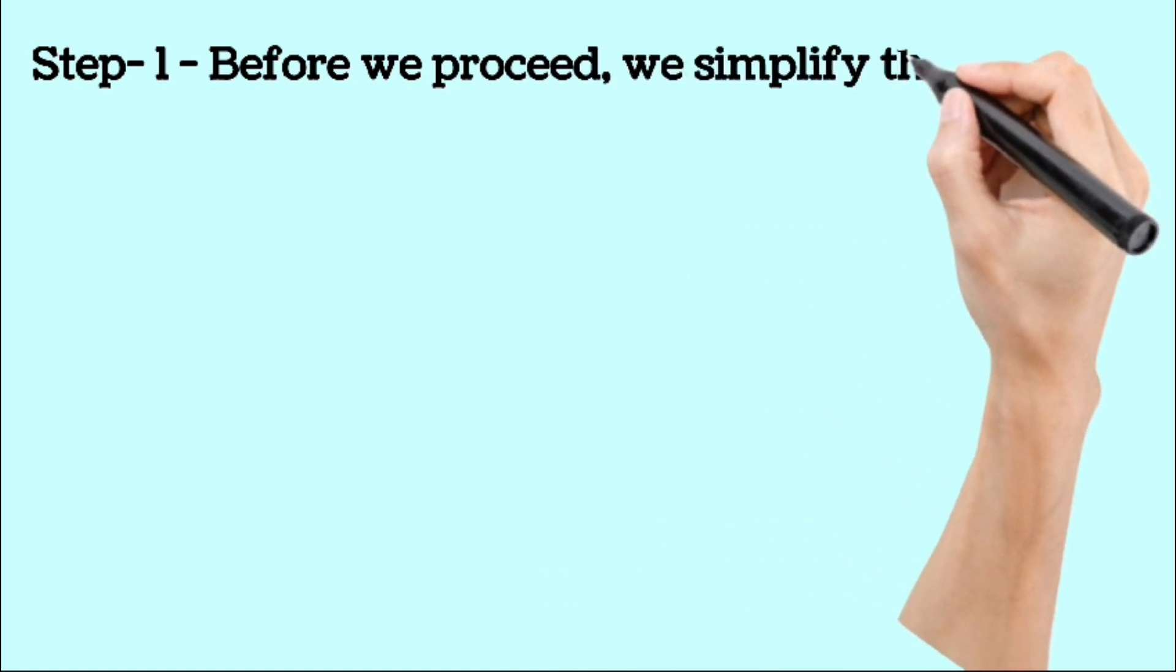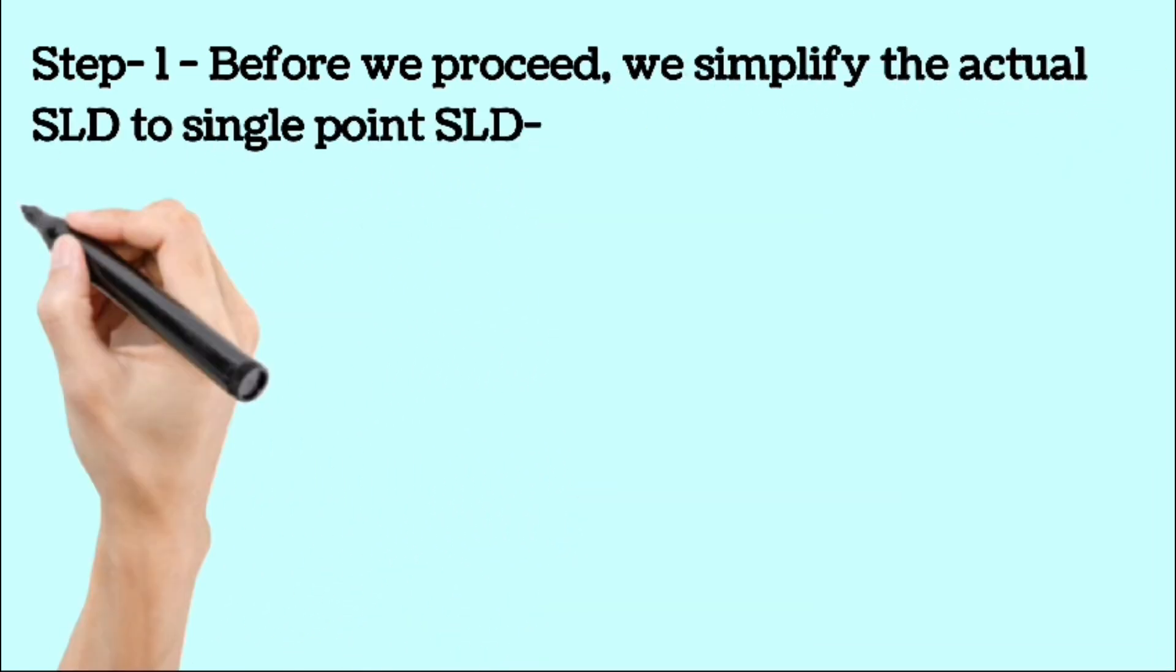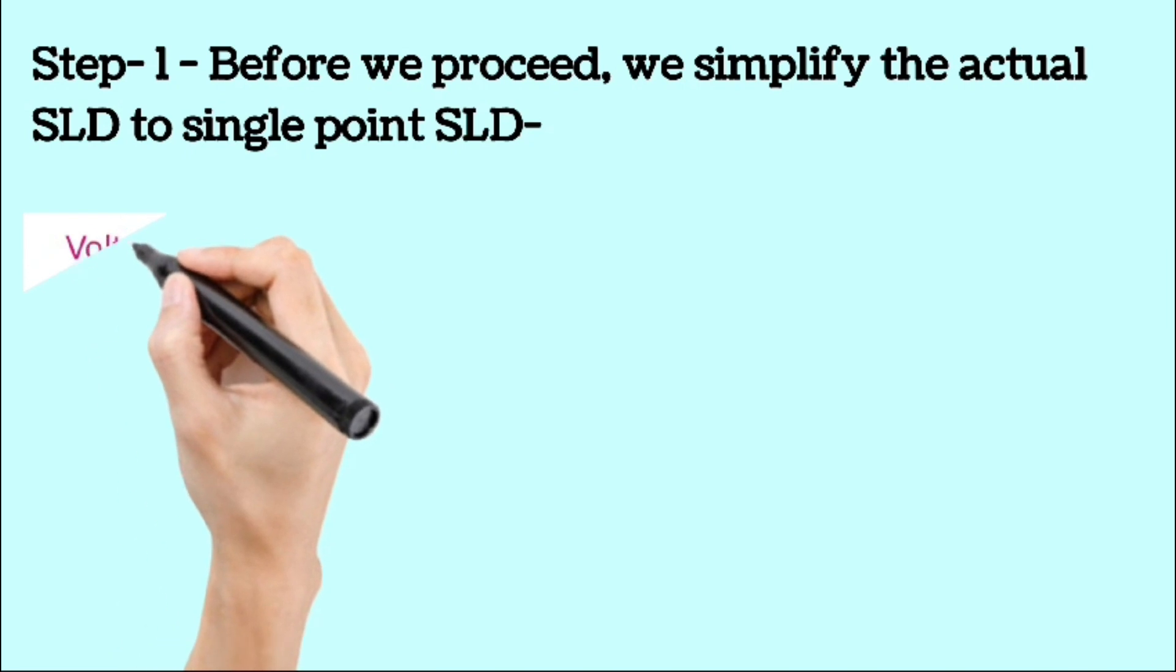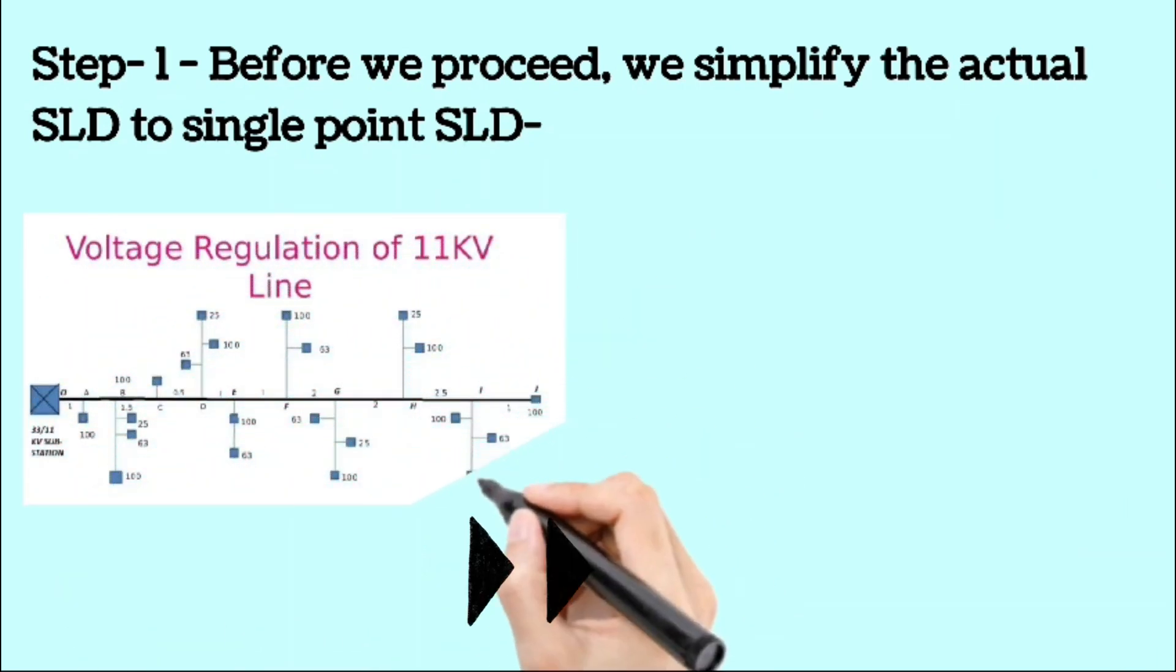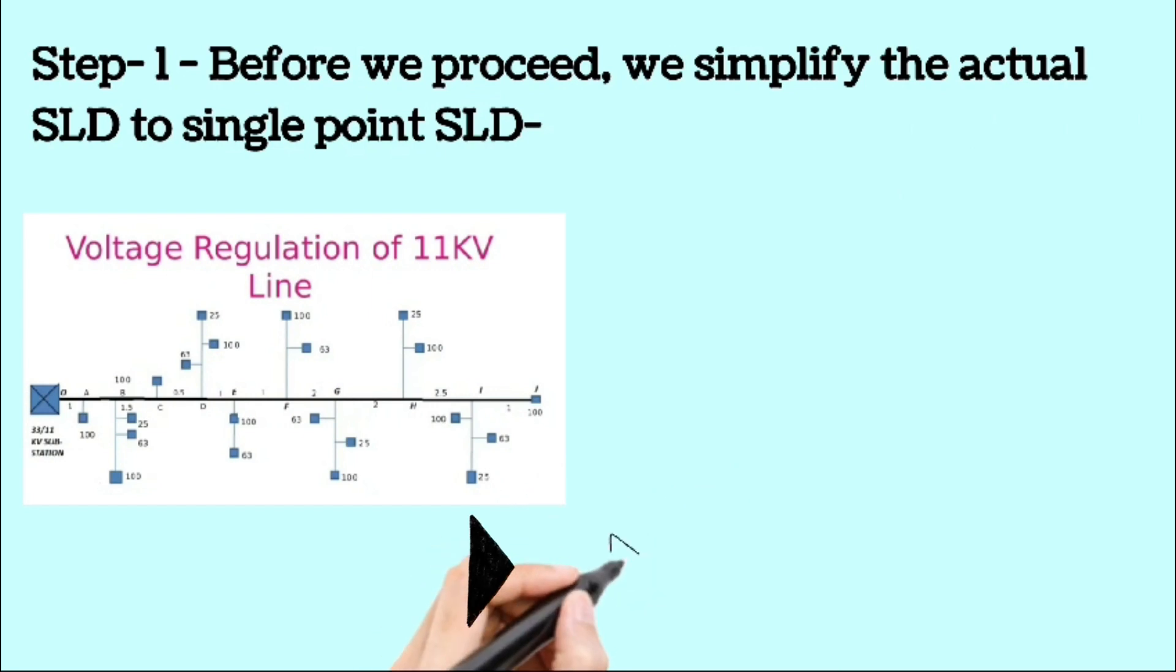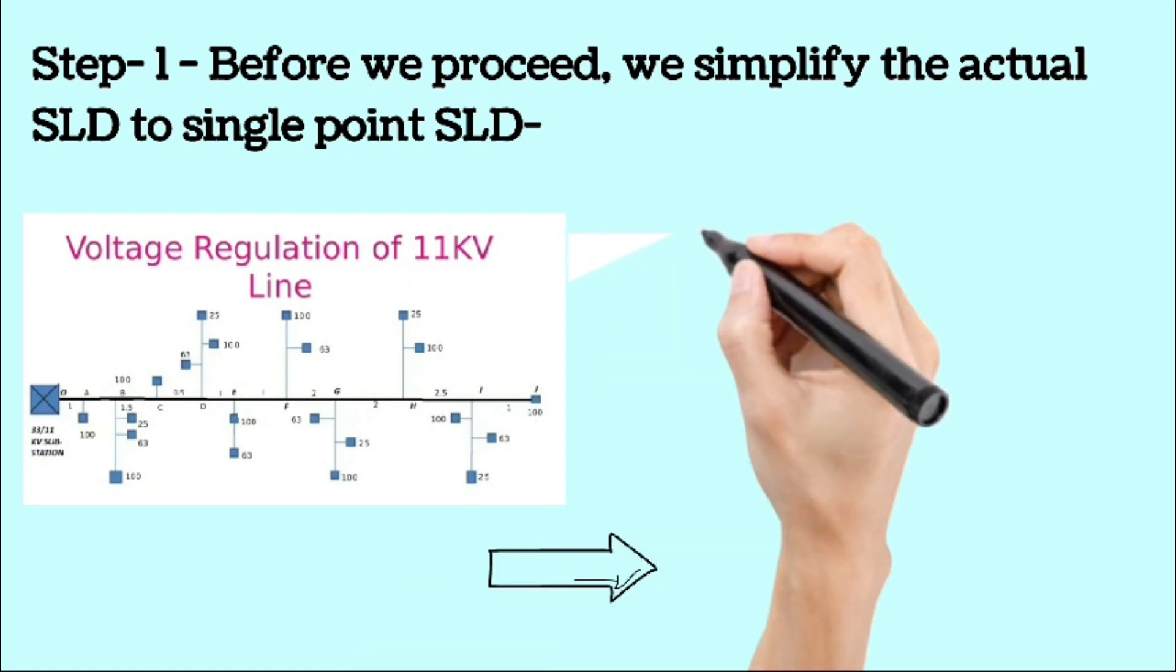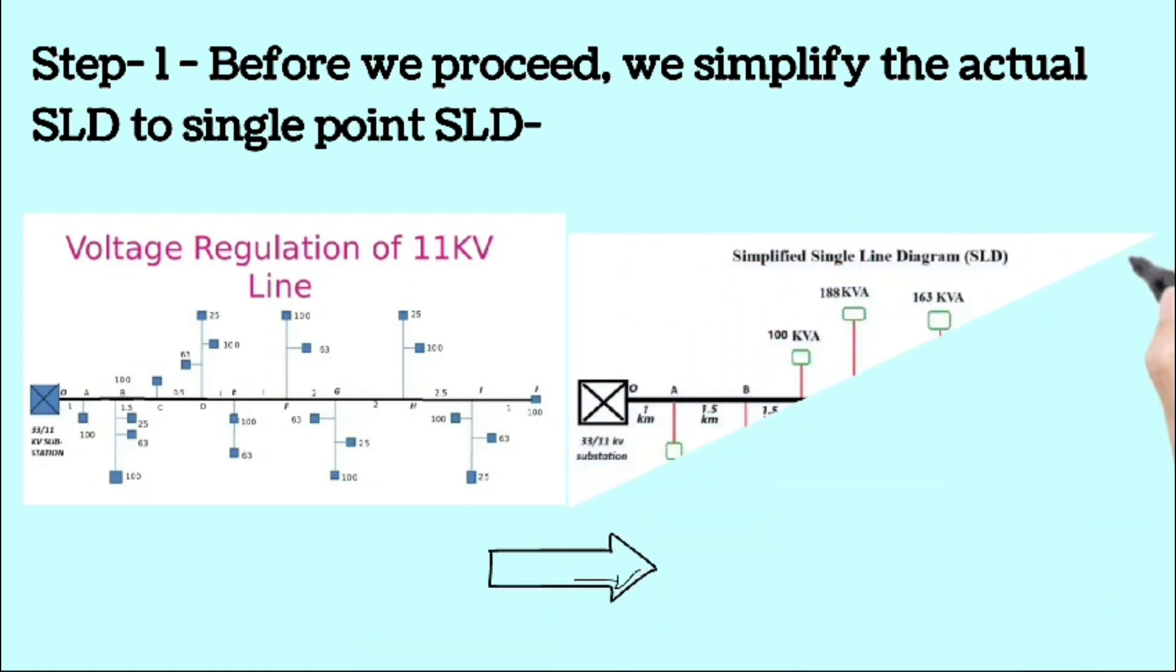Hey engineers, now we try to simplify the actual single line diagram into a more manageable single line diagram. This simplified diagram represents shorter tapping lines as point loads on the SLD. Remember, the tail end should be identified as the point farthest from the source. We add all load of each taping and make one point load as given in this diagram.